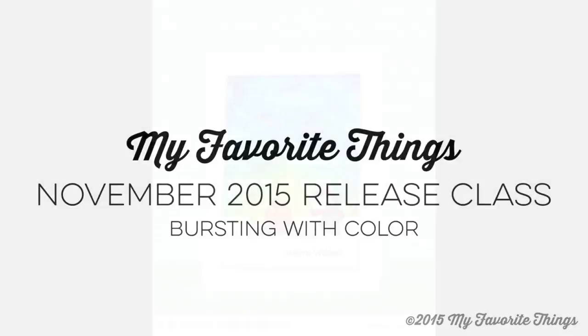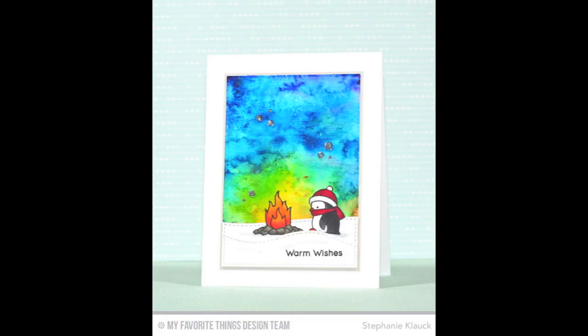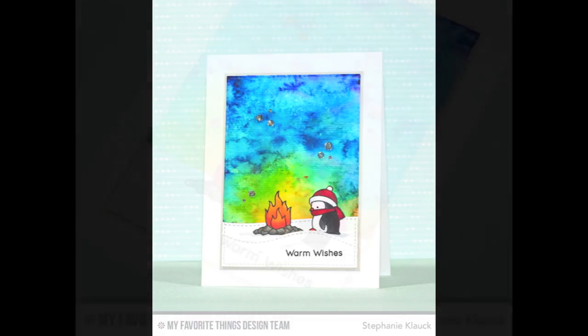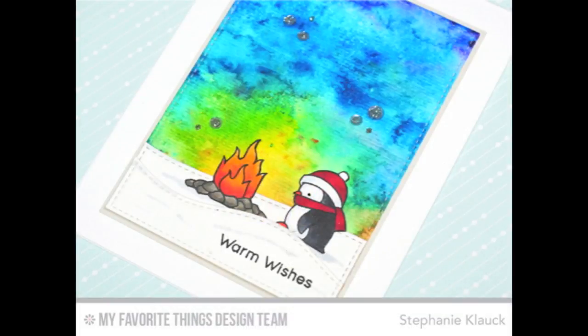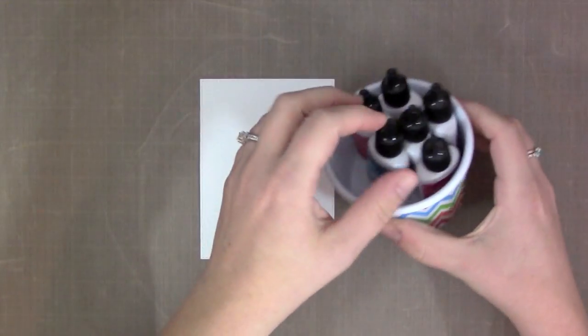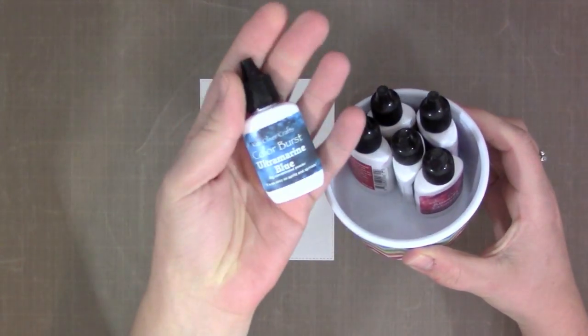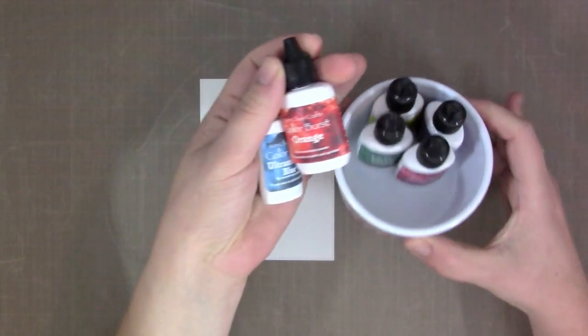Hi everyone, it's Stephanie with a video for My Favorite Things. For this month's release, I created a card using the Ken Oliver Colorburst powders to create a cool background effect to use with some of the new release stamps. In this video, I'm just going to be sharing how I created this background.